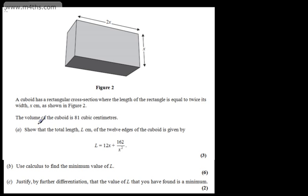In part A, for 3 marks, we need to show that the total length L centimeters of the 12 edges of the cuboid is given by L equals 12x plus 162 over x squared. So we have a volume, and we know that the volume of the cuboid will simply be the product of the three dimensions.